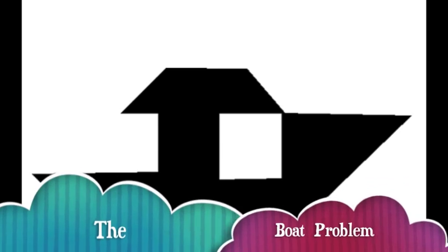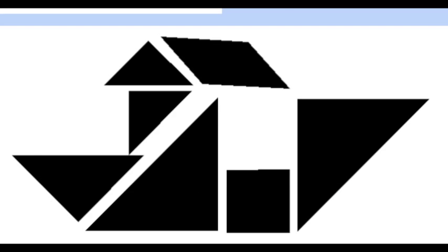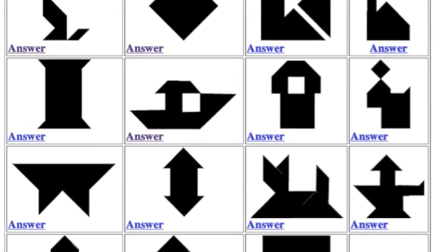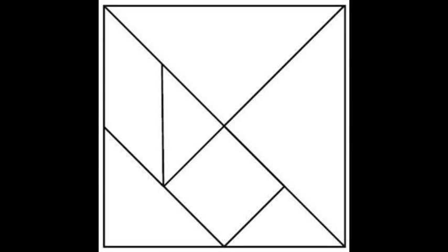For example, you're seeing some of the examples now, but let's say you had this square made up of the seven shapes. You could form a cat using the seven shapes, or for example, you're given this boat. You could form the boat using the seven shapes or any of these.